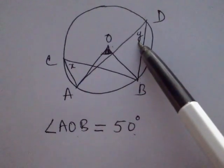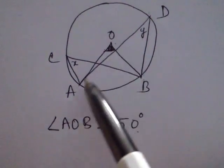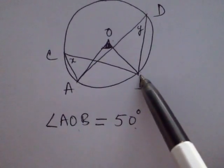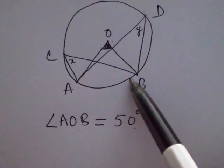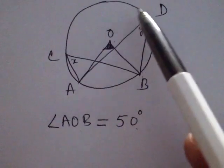We know that the angle subtended by an arc at the center of the circle, that is angle AOB, is twice the angle subtended by the same arc at any other point, that is here in this figure, C and D.